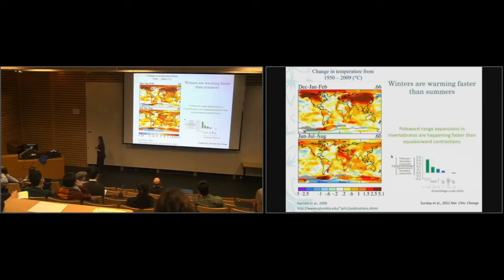It actually turns out across invertebrates that generally we see poleward range boundaries expanding faster than equator boundary contractions. This kind of makes sense in the context of winter. To understand the effects of climate change on species distributions, we really need to understand what's limiting species on their poleward range edge, and how that mechanistically works.